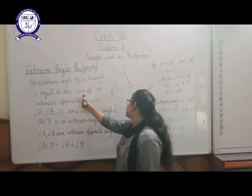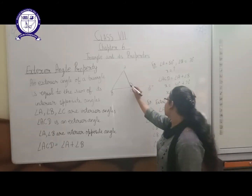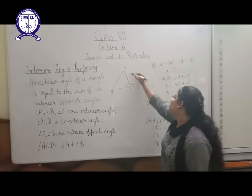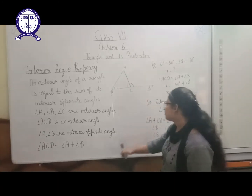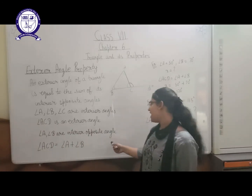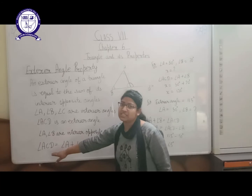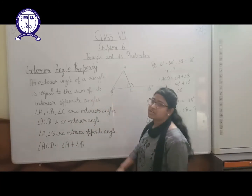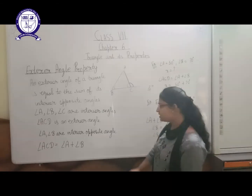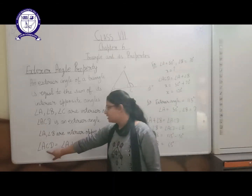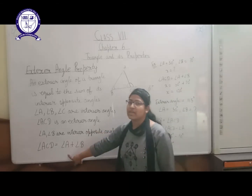From the definition, the interior opposite angles of exterior angle ACD are angle A and angle B — the two angles not forming a linear pair with ACD. So by the exterior angle property, angle ACD is equal to angle A plus angle B.